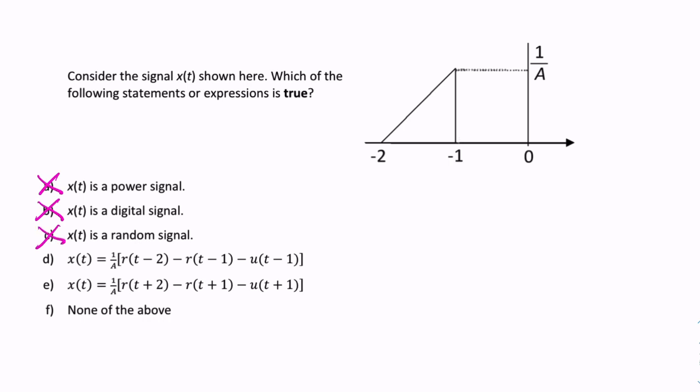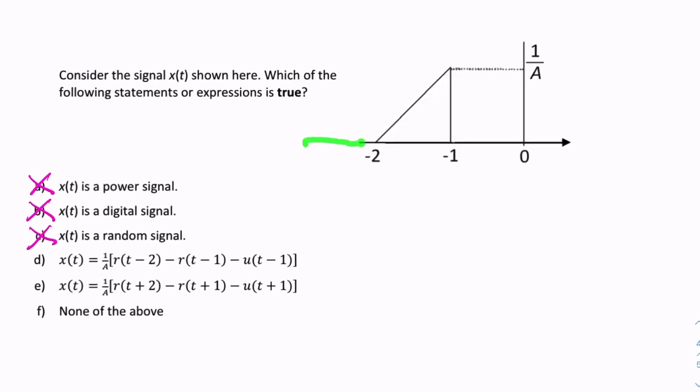So, next, we need to determine how would we represent this signal mathematically. It looks like it's zero for a long time, and then suddenly, at t equals minus two, it starts increasing. So, there's clearly a ramp happening at t equals minus two. It's a ramp that happens before t equals zero. So, it's a ramp that happens at t equals minus two.